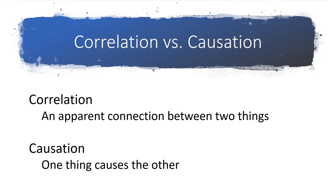So let's be clear about what I mean by correlation and causation. Correlation is when there's apparently a connection between two things, such as 5G availability versus areas of COVID-19 infections. Just because there's a correlation doesn't mean that one causes the other.